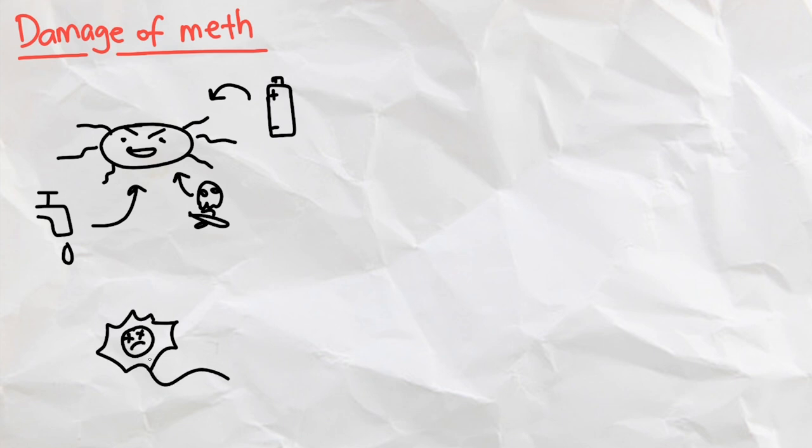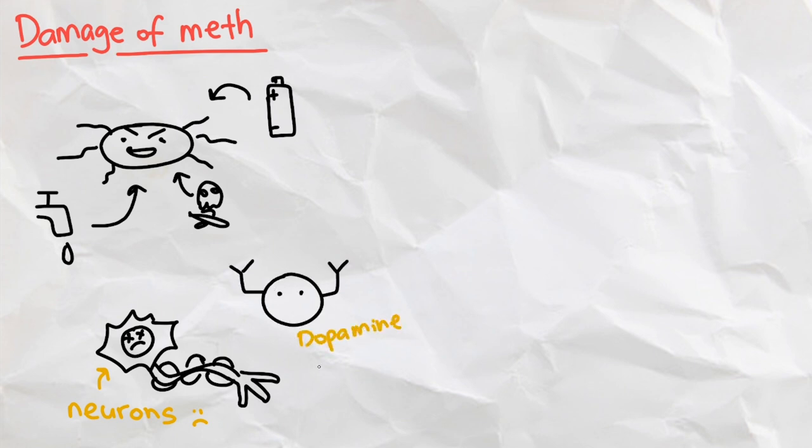The use of meth causes significant amounts of cell death in our nervous system and brain, especially our dopamine transporters. These are responsible for the reuptake of dopamine as mentioned earlier, to make sure that not too much dopamine is flooding our bodies.